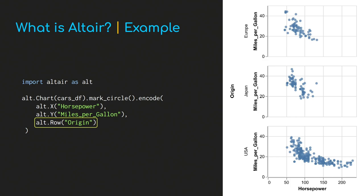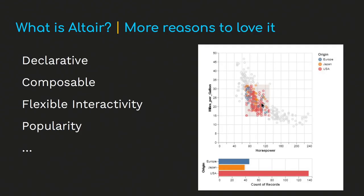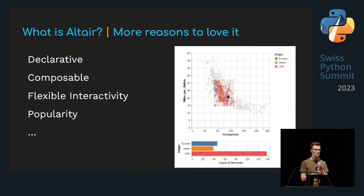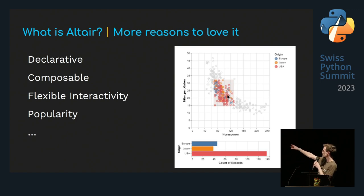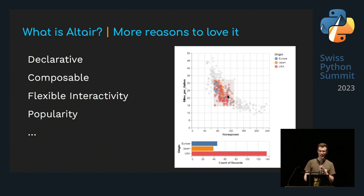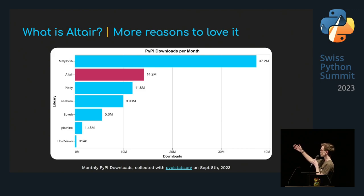This is in contrast to the more imperative style that Matplotlib has. Apart from being declarative, Altair is also composable — things you learn in one corner of Altair you can apply in another, and you can compose small things into bigger and more complex visualizations, starting very simply. There's also flexible interactivity: you can select data points and a histogram at the bottom updates. It works well with web applications. And importantly: it's very popular — second to Matplotlib in PyPI monthly downloads — so there's a big community and lots of resources.